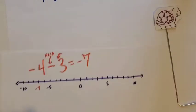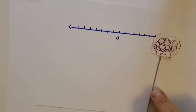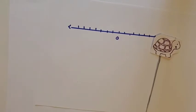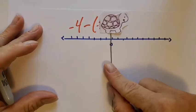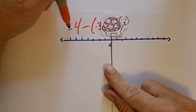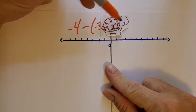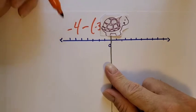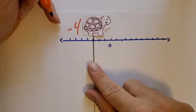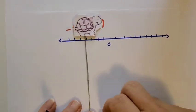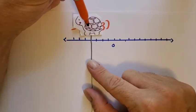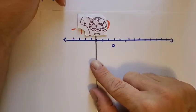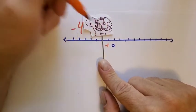Think about that on the number line. The only example we haven't done is negative 4 take away negative 3. Starting here — Trini faces right. We reverse him 4 steps: 1, 2, 3, 4. Now we have a subtraction sign, so we flip Trini's direction. Now it's negative 3, so Trini goes backward 3: 1, 2, 3. And where's Trini? Trini's at negative 1.